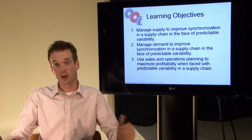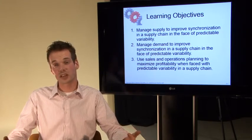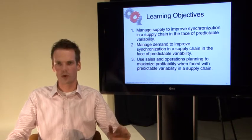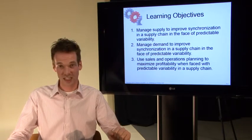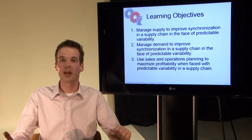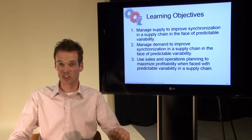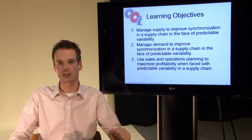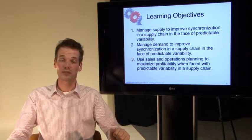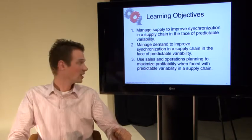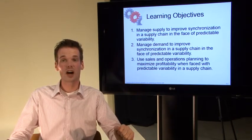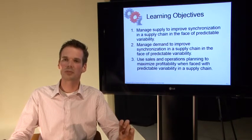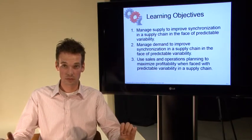Please recall that the objective of supply chain management is profit maximization over the whole supply chain. That profit maximization of course has to be ethical — but ethicality is covered in a different course, so please refer to that course to put profitability in a good perspective. An important concept in Chapter 9 is predictable variability. Here we are only covering predictable variability; in further chapters we will address solutions to unpredictable variability.